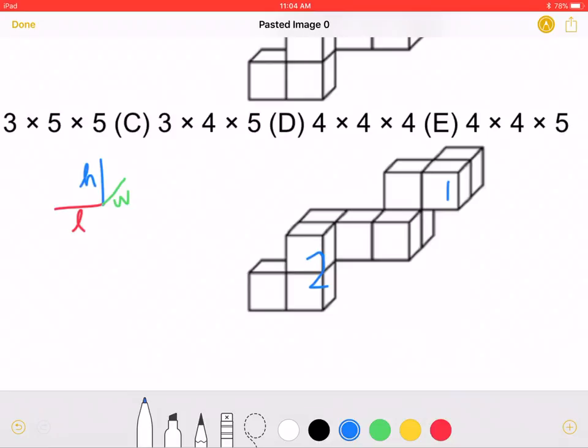because this cube is on the same level as this cube, so we must not count it again. Therefore, the height will have a total of 3. Next,